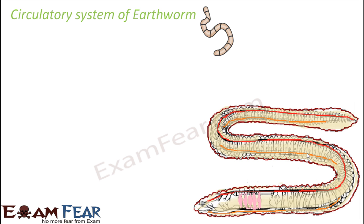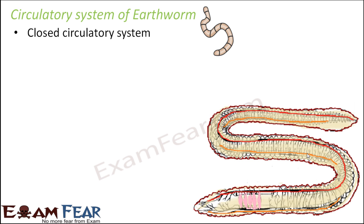Here we will talk about how blood circulation takes place inside the body of the earthworm. They have a closed circulatory system. What do we mean by a closed circulatory system? It means blood is confined to tube-like vessels and the heart. Blood is present only inside the blood vessels. In some organisms like insects, blood is not present in blood vessels — it is simply present in the body cavity and the organs are floating in the blood. That is an open circulatory system. But in a closed circulatory system, blood will always be confined in blood vessels. The circulatory system here basically consists of heart and blood vessels.